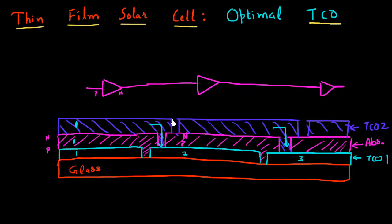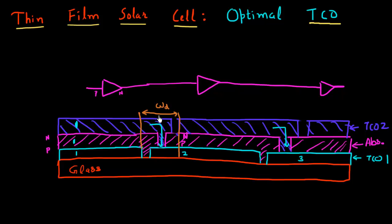In these three laser scribe processes, they're only very roughly aligned to each other, so there's no lithographic patterning or anything going on over here. The only way these laser scribes are aligned is optical alignment, and that essentially requires you to leave quite a bit of spacing between each of these laser scribes. This region, in between these three laser scribes, is typically hundreds of microns wide in usual cells.